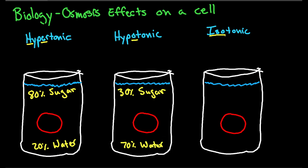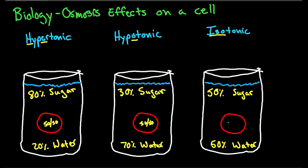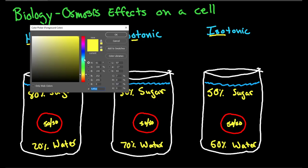And then iso means equal — so 50% sugar, 50% water. Now that we have our percentages for these three types of solutions, we need to determine what is going to happen to the red blood cell. I always assume these blood cells are like a 50-50 mix: 50% solute, 50% solvent.